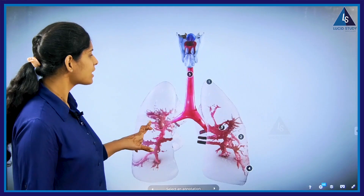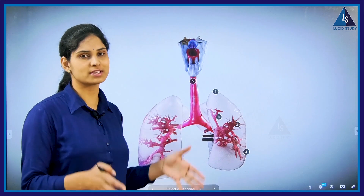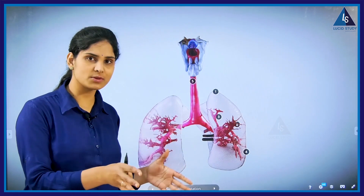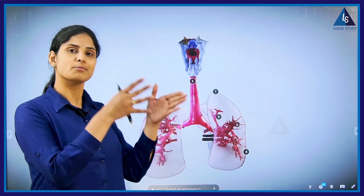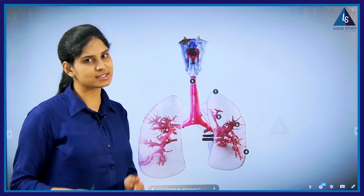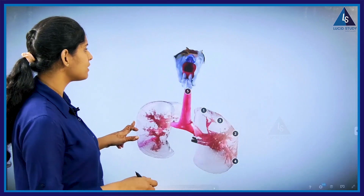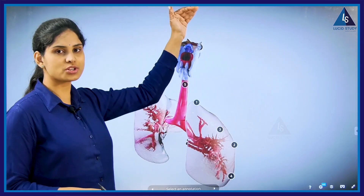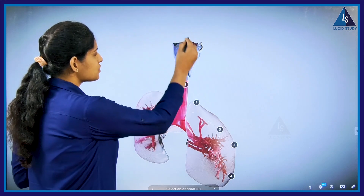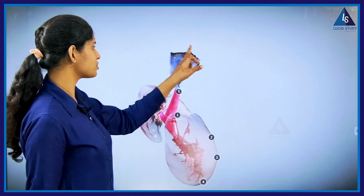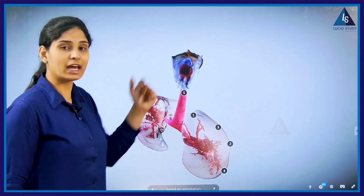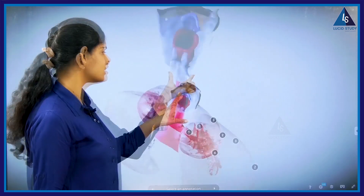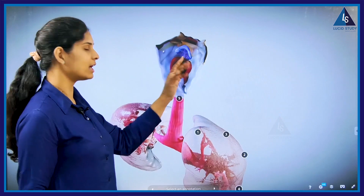This is how the respiratory tract looks. We have discussed the various pathways that air travels through different organs and how the epiglottis helps in passing air into the lungs and food into the stomach. The nostrils are the first structures which help in the entry of air, then it reaches the nasal cavity, then comes the pharynx. The small bluish-colored structure visible here is the epiglottis, which helps in opening and closing for the passage of air and food into the lungs and stomach.